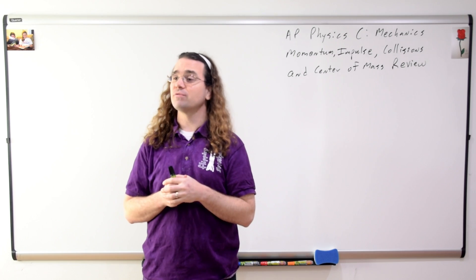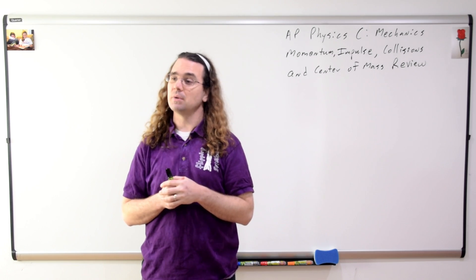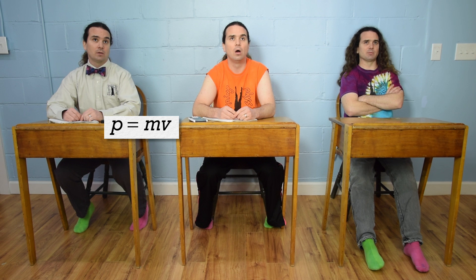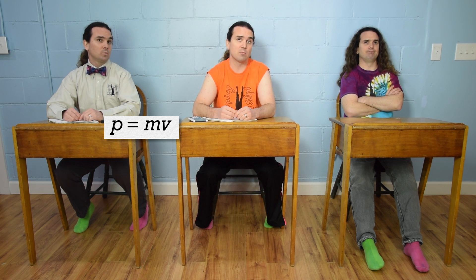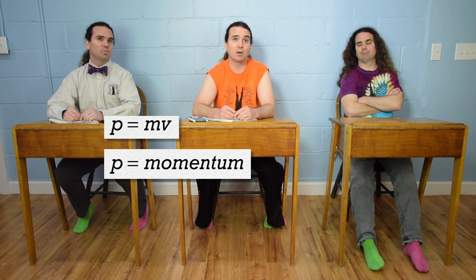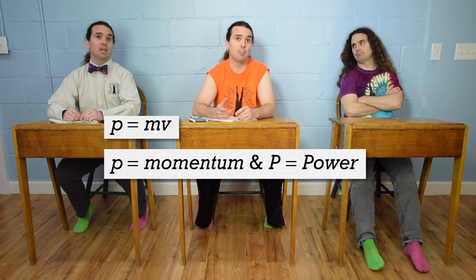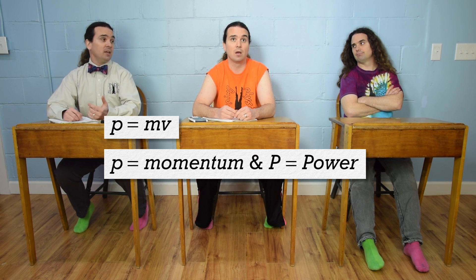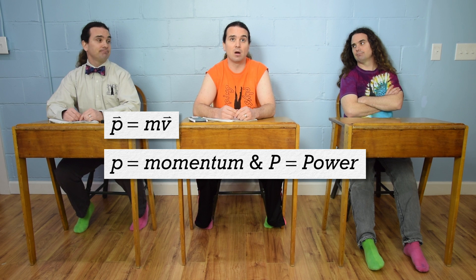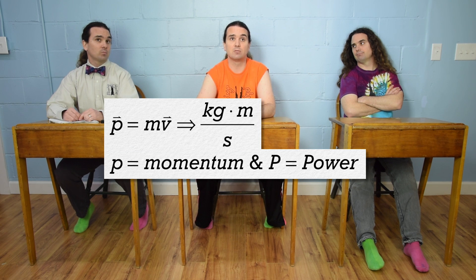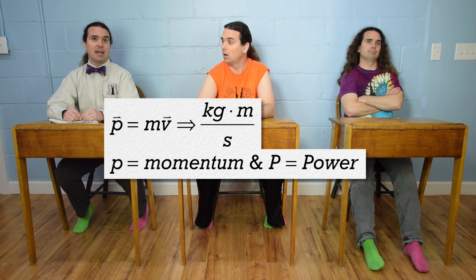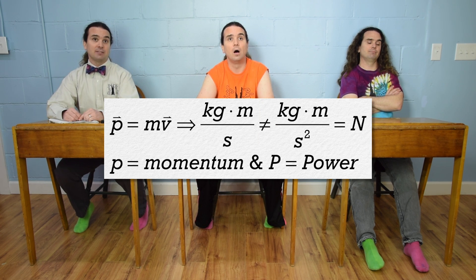What is the equation for momentum? Momentum equals mass times velocity. We should point out momentum is a lowercase p, and power is an uppercase P. Momentum and velocity are vectors. The units for momentum are kilograms meters per second, and the units have no special name — unlike newtons, which are kilograms meters per second squared.